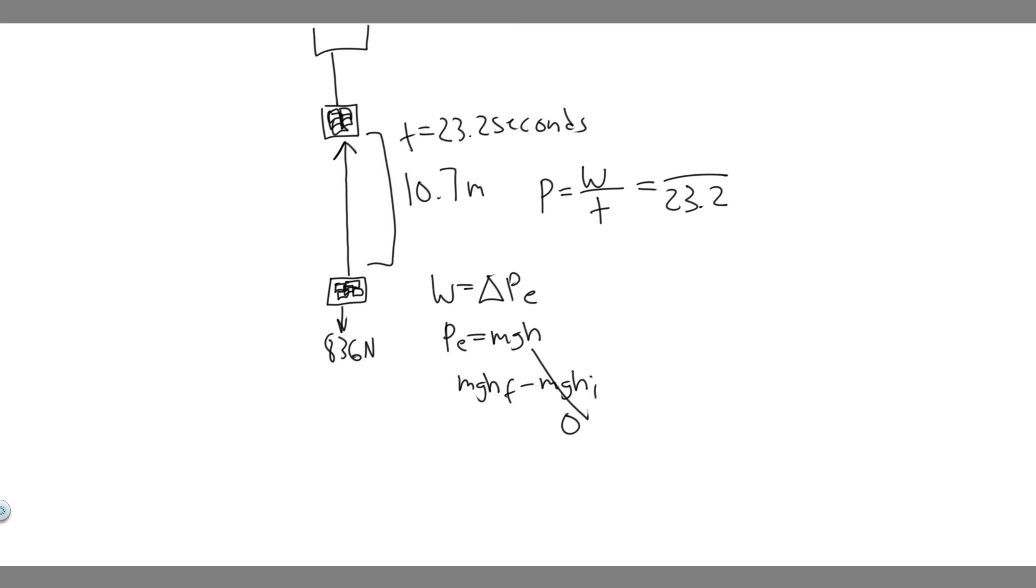So what we can do is just solve for this. So work equals the change in potential energy, which is this, which just means the work equals mgh final. So we know the mass in this case, or mg in this case, is 836 newtons. Because they tell us how much it weighs, they don't give us the individual mass. We can solve for it, but basically when they say how much it weighs, they're talking about mg.